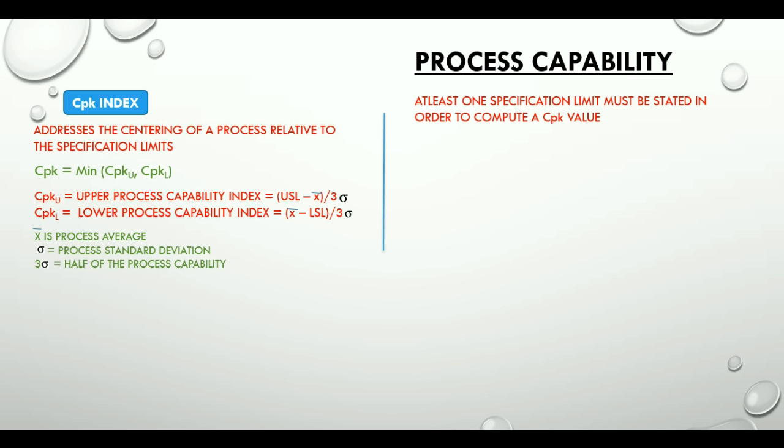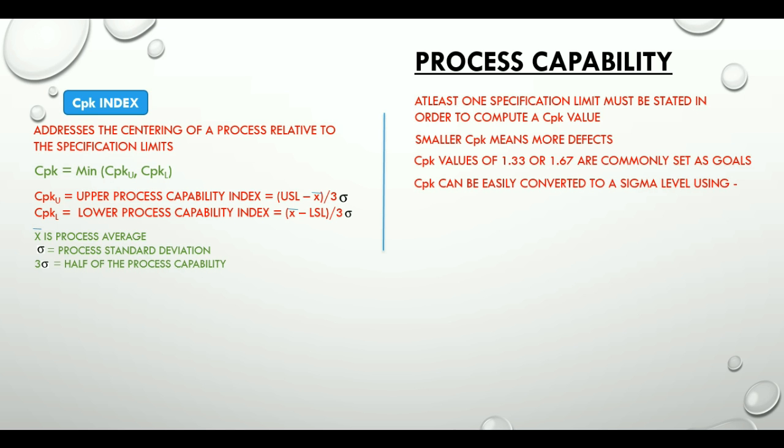Smaller CPK means more defects. CPK values of 1.33 or 1.67 are commonly set as goals. An interesting point here is we can easily convert CPK to a sigma level. The formula is sigma level is equal to 3 times CPK.